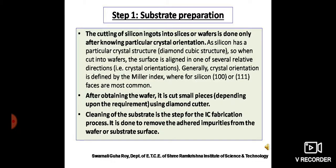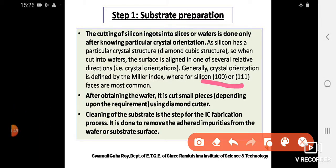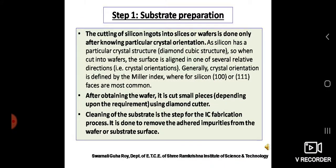Generally, the crystal orientation of silicon is found to be (100) or (111). These are the Miller indices of the particular type of crystal. Though this is not in your course, so I am not discussing this part elaborately. The point is that you have to cut the wafers into pieces in the dimensions which you require for IC fabrication.